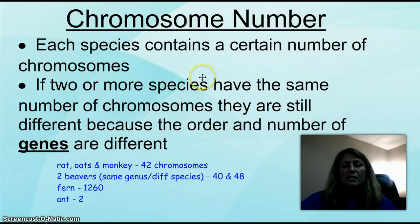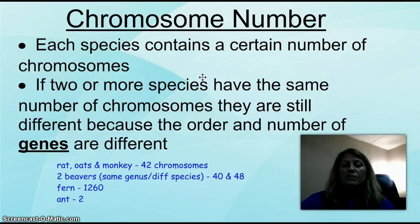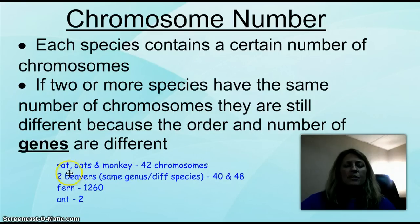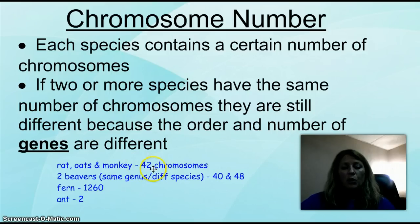Chromosome numbers: each species has a set or certain number of chromosomes. If two or more species have the same number, they're still going to be different — it's all based on the number of genes, how they're arranged, and how they're different. For example, a species of rat, oats like your cereal, and a particular kind of monkey — the Reese's monkey — each one of those has 42 chromosomes.